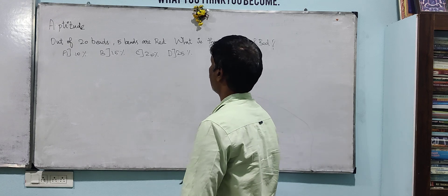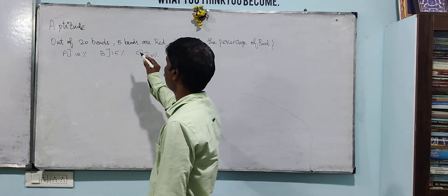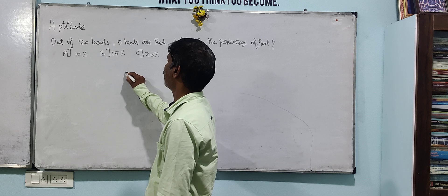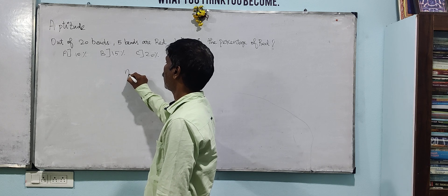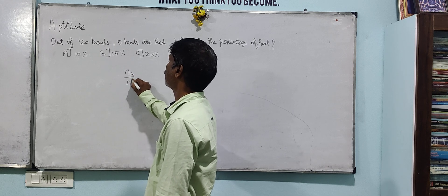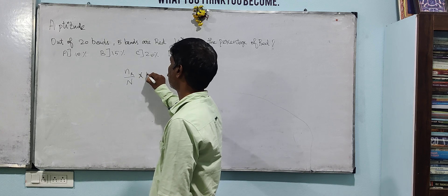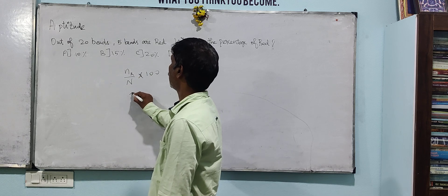In the morning chapters, we will talk about 20 weeks and we will talk about 5 weeks, number of red. So number of red by total number, we will talk about 20 weeks. So number of red is 5 weeks.